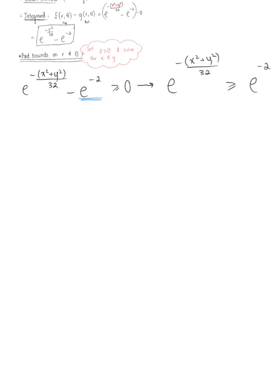To remove the natural exponentials and solve for x and y, we apply the inverse property and take the natural logarithm of both sides. The natural logarithm and natural exponential undo each other, leaving us with negative x squared plus y squared divided by 32, which is greater than or equal to negative 2.